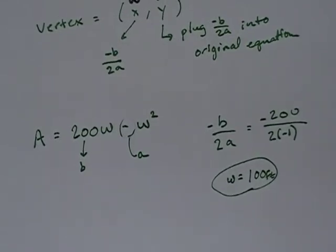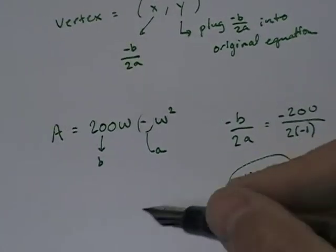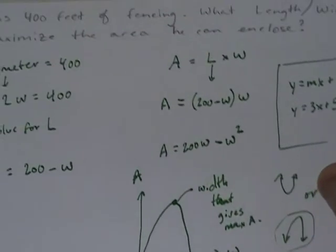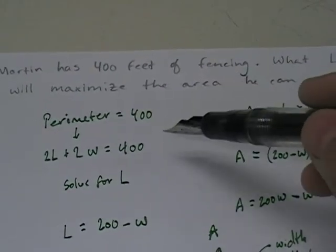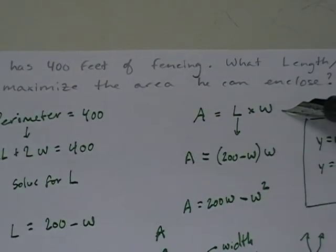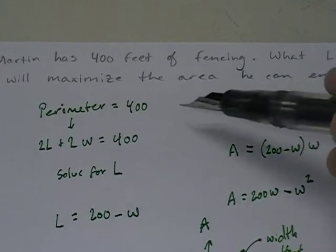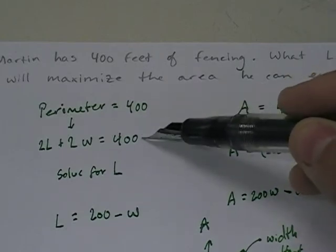And in our case, it's feet. W equals 100 feet. 100 foot width will maximize the area. Now in the original problem, they asked me for width and length. So what do we do? Well, we go back up to our original equations which were perimeter and area and pick one. I'm going to use perimeter. I'm going to use this equation right here.